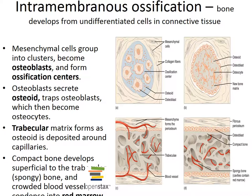As the ossification process proceeds, the osteoblasts get trapped within lacunae and differentiate into osteocytes. The next step is formation of woven bone in the periosteum. Osteoid accumulates and fuses together, forming struts called trabeculae or spicules around blood vessels. The overall structure is similar to spongy bone.